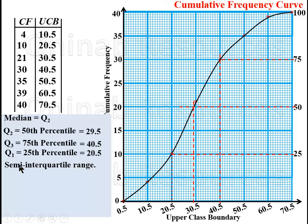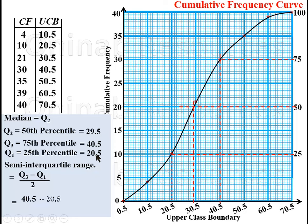Now to calculate the semi-interquartile range. The interquartile range is Q3 minus Q1. Since we want the semi-interquartile range, we divide by 2. So we have: (40.5 minus 20.5) divided by 2. 40.5 minus 20.5 gives 20, and 20 divided by 2 gives 10. Therefore the semi-interquartile range is 10.